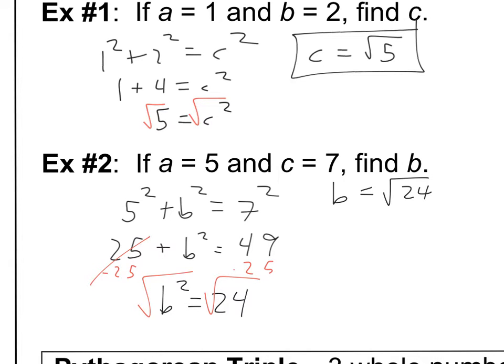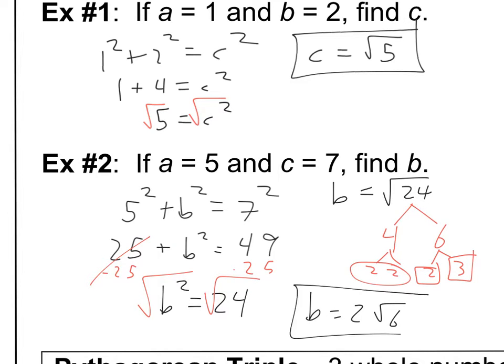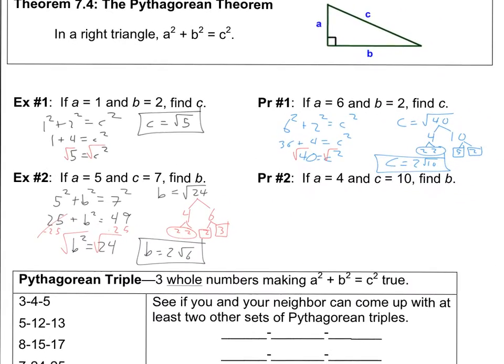And once again, I'm going to factor this thing down. That's like 4 times 6. That's just 2 times 3. And that's 2 times 2. So there's my pair. There's my loners. So b equals 2 root 6. Okay. Alright. Go ahead and try practice number 2. Pause the video and then unpause it when you're ready to check your work.